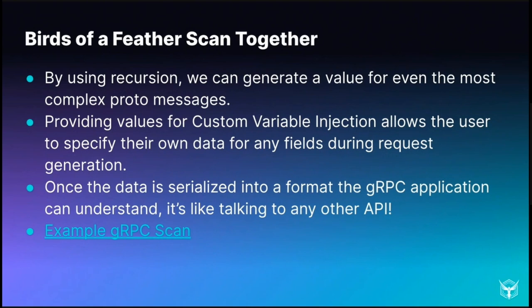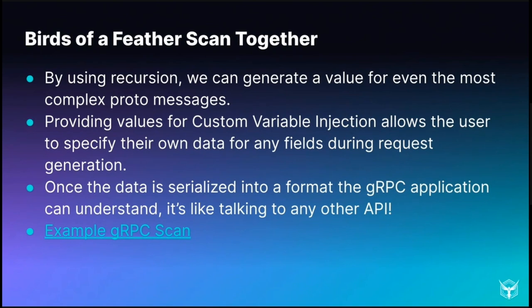Something important we've implemented is custom variable injection. As the scanner is running and you have certain fields in your messages or endpoints, you can designate certain values to those specific fields. For example, if you have test users in your CI/CD pipeline in pre-prod, you can say: when the scanner runs and this user ID comes up, use this specific user ID, because they might exercise different branches. That allows you to make sure you exercise all the different logic branches of your code and let the scanner explore every nook and cranny. Once we have these messages constructed and can start sending to the gRPC application, we're off to the races. All the serialization happens behind the scenes, so when communicating to and from the gRPC application, it's in the correct bytecode. When we present the findings on our side, we serialize that back into human-readable JSON, so it's easy to interpret the data without going through all the bytecode.